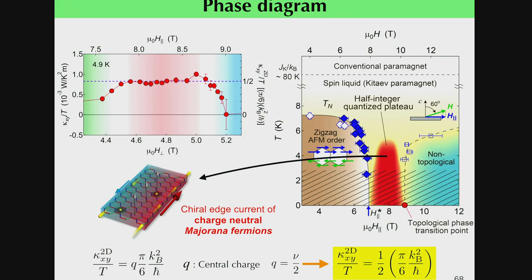In summary, between the magnetically ordered state and the non-topological spin-liquid state, there is a Kitaev quantum spin-liquid state, evidenced by the observation of half-integer quantized thermal Hall conductance.